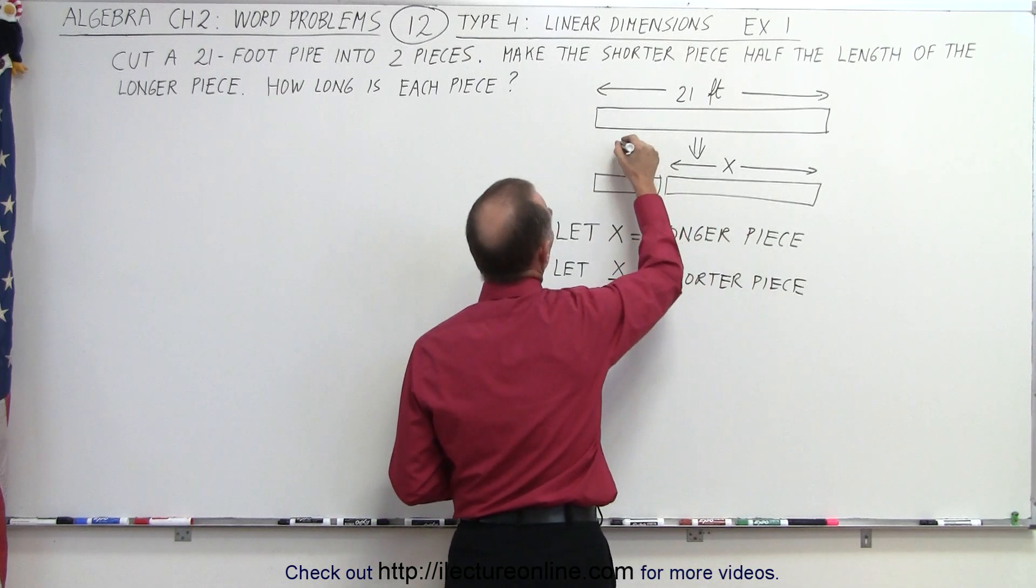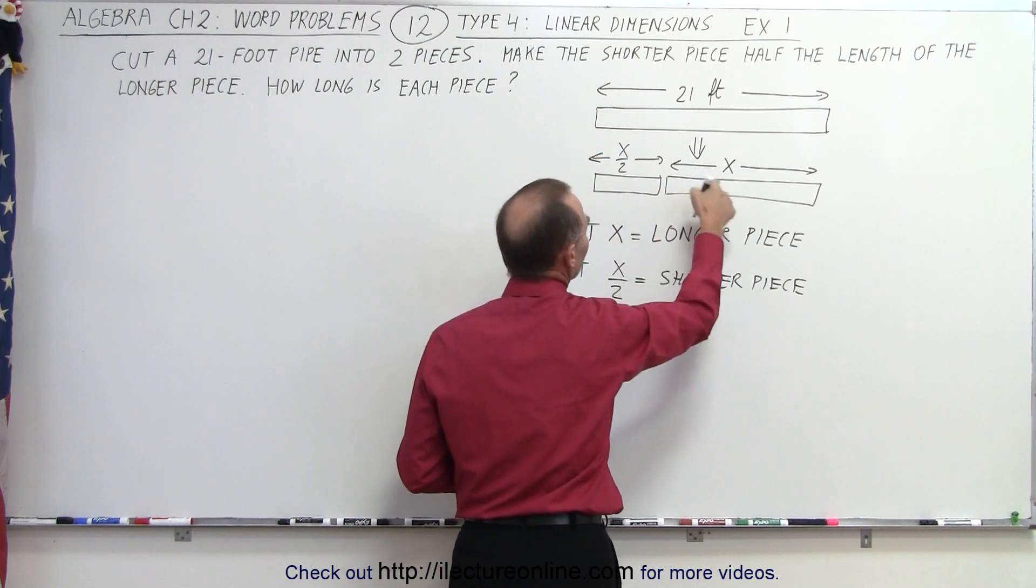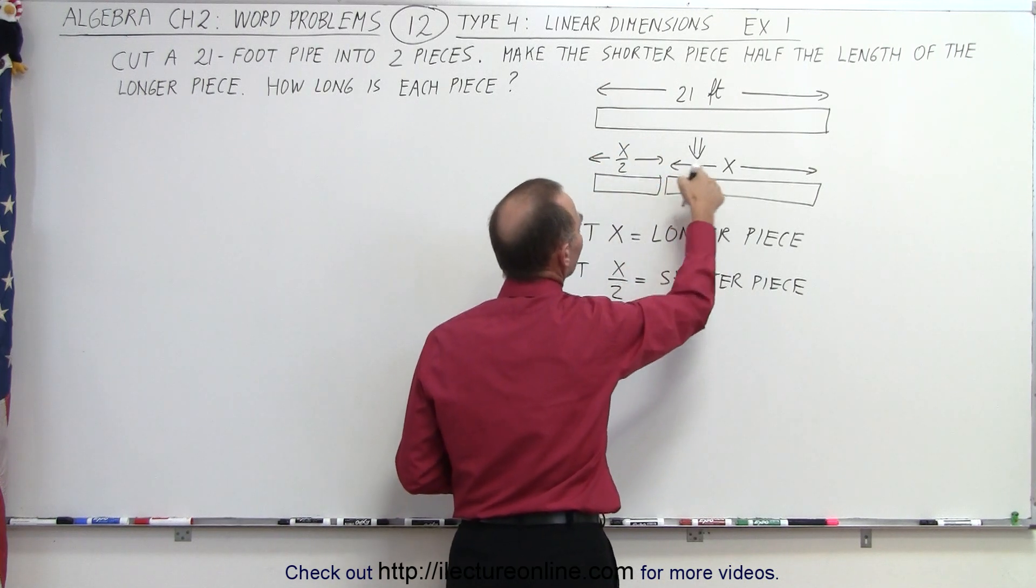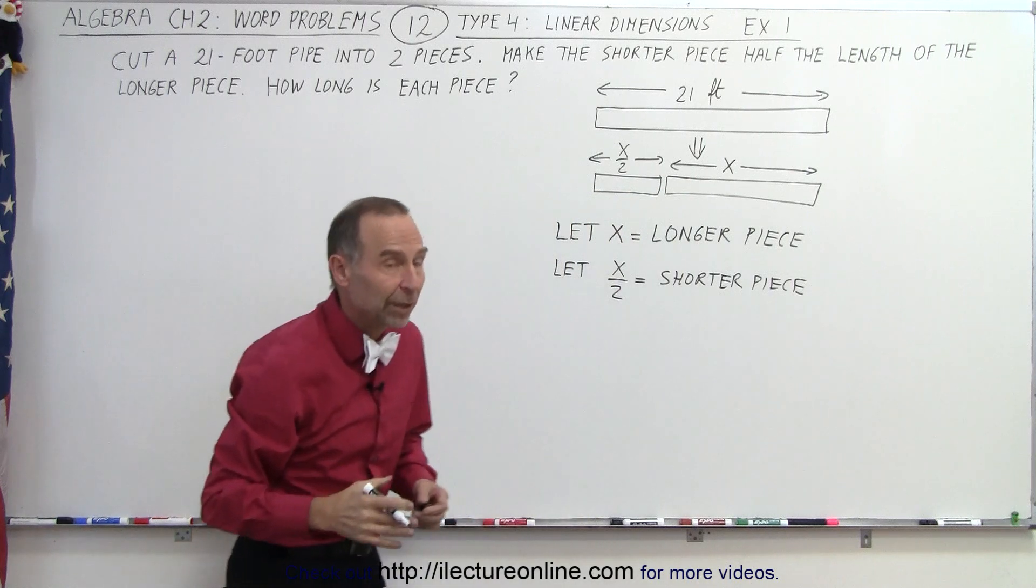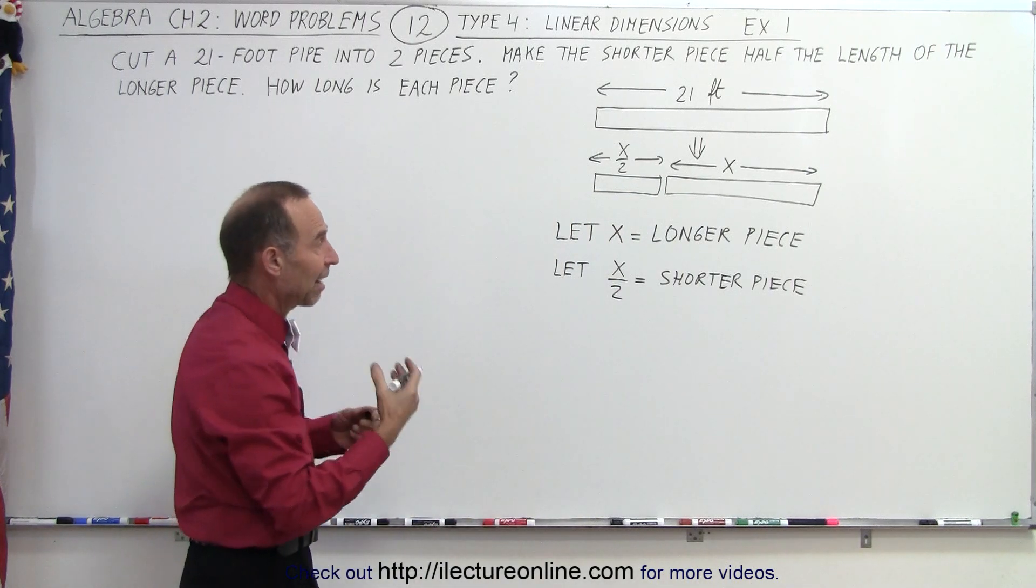And so this piece here would have a length of x over 2, which clearly shows that this is half the length of this piece. x over 2 is half of x. That's why we let x be the longer piece and x over 2 be the shorter piece, being half the longer piece.